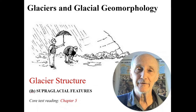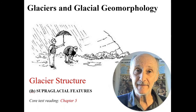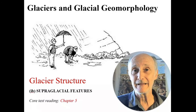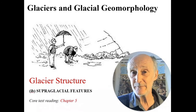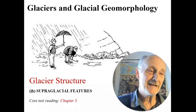Hello again everybody. We've been talking about glacier structure or anatomy, and in the last video we made the point that the characteristics of a glacier vary with depth from the surface through to the bed, and that therefore we might predict that the behavior of a glacier is also going to vary with depth because of those changing characteristics. For example, changes in temperature are going to have an impact on the flow law parameter.